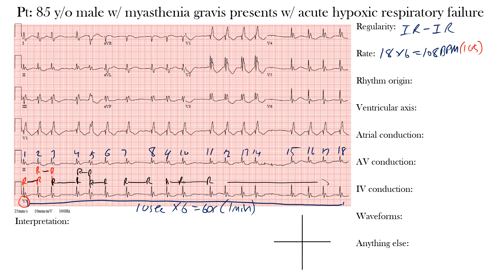Now let's look at the underlying rhythm origin. We can't make out any clear P waves, and the QRS complexes appear wide, so we may be dealing with a ventricular rhythm. However, because the rhythm is irregularly irregular, it's more likely we have some chaotic supraventricular activity. We'll say the rhythm is likely originating from a supraventricular source.